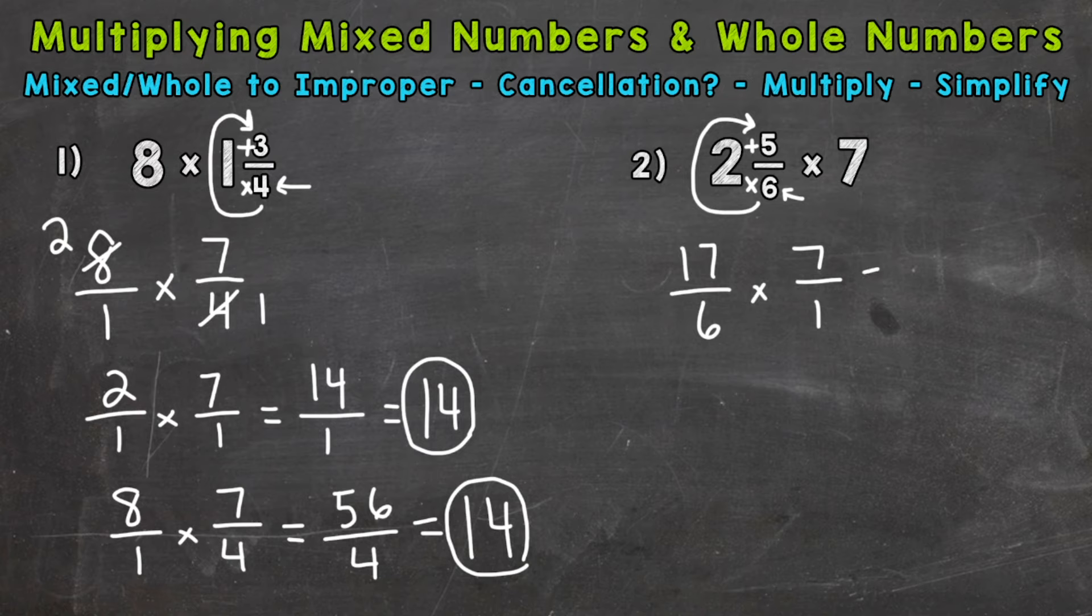So we go right to multiplying straight across. And we'll start with 17 times 7, which we can come to the side to solve. 7 times 7, 49. 7 times 1 is 7, plus 4, 11. So we get 119. 6 times 1 is 6.